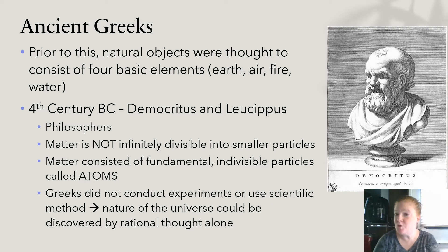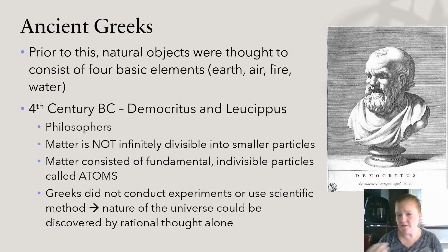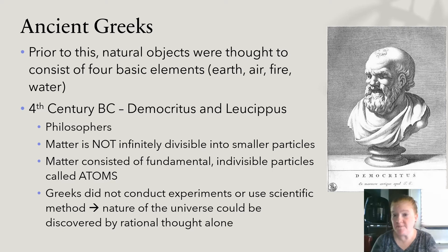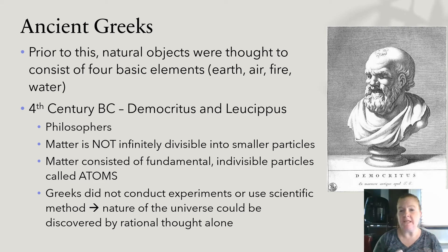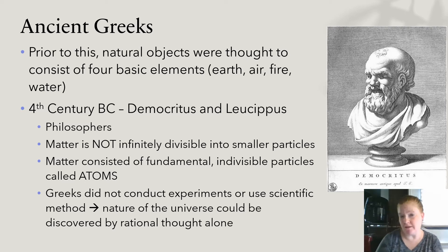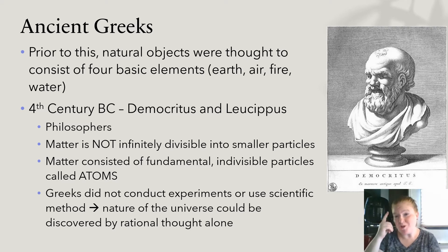In the fourth century BC, two key names — Democritus and Leucippus — were philosophers who came up with the first parts of what would be considered the atomic theory. They stated that matter is not infinitely divisible; you can't keep dividing matter into smaller and smaller particles. Matter consisted of fundamental, indivisible particles called atoms. Now, the Greeks did not conduct experiments or use the scientific method — they thought the nature of the universe could be discovered by rational thought alone, hence they were philosophers.